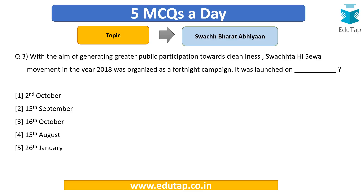Question 3: With the aim of generating greater public participation towards cleanliness, the Swachhta Hi Seva movement in 2018 was organized as a fortnight campaign. On what date was it launched? It is a 15-day campaign — take a hint from that. Your options are: 2nd October, 15th September, 16th October, 15th August, or 26th January.